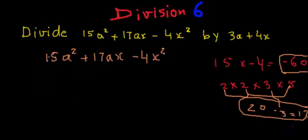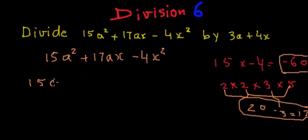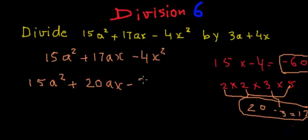Now let's apply that grouping to find the factors of 15a squared plus 17ax minus 4x squared. We split 17ax as 20ax minus 3ax, so the expression becomes: 15a squared plus 20ax minus 3ax minus 4x squared.